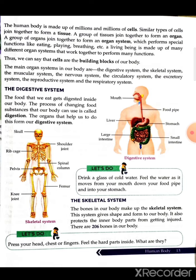For example, the digestive system: the food that we eat gets digested inside our body. The process of changing food into substances that our body can use is called digestion. The organs that help us do this form our digestive system — our mouth, food pipe, liver, stomach, large intestine, and small intestine. These are the organs forming our digestive system.